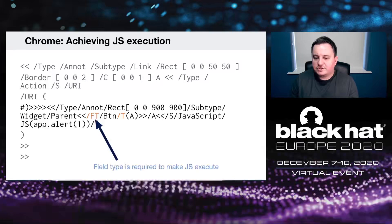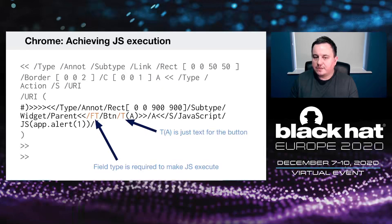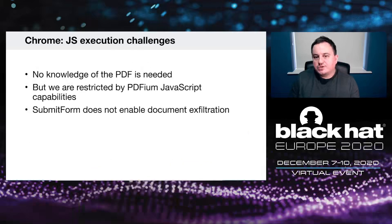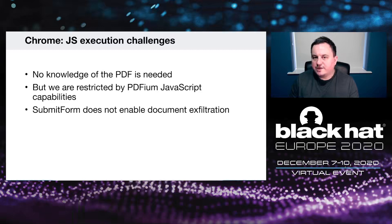With the reduced injection vector, this will execute JavaScript on Chrome. The field type 'Button' is required, and the value doesn't matter. If you link the annotation to a submit form button, Chrome will allow JavaScript execution on that annotation. There were still challenges — no knowledge of the PDF is needed, which is good, but we're restricted by the capabilities of PDF JavaScript. Calling the submit form function doesn't enable stealing the entire PDF contents, since it doesn't support all the features Acrobat supports.